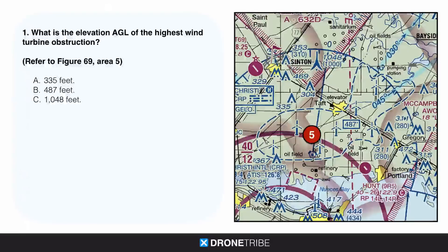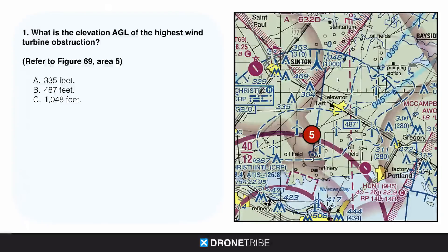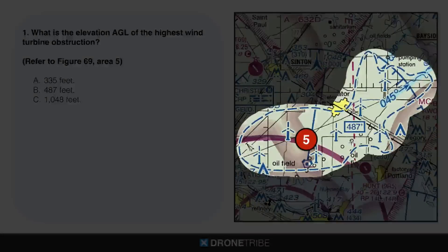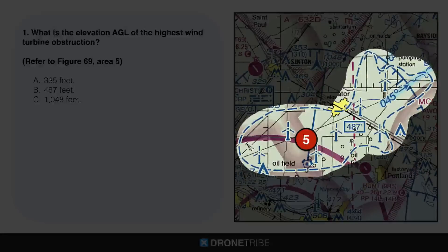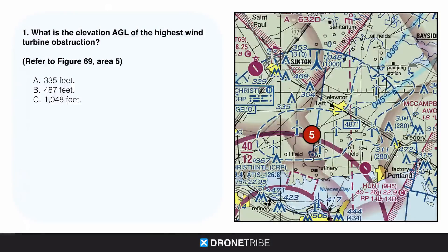Question one: what is the elevation in AGL of the highest wind turbine obstruction? This is in figure 69, area 5 of the testing supplement. When we flip over to that, we can see area 5 and the AGL elevation of the highest wind turbine listed — that's going to be 487 feet. Generally though, this can be listed in MSL, and it will specify that if it is MSL.